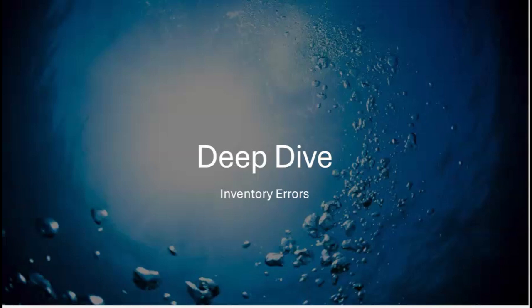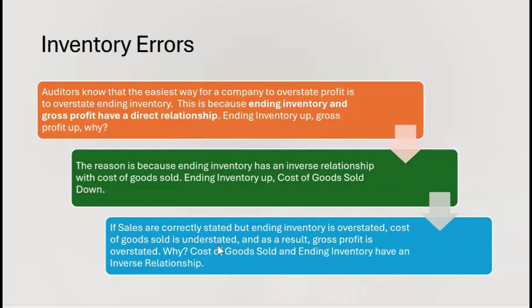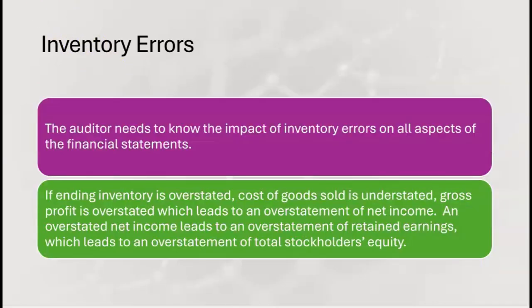Let's do a deep dive on inventory errors. This topic could be on any accounting exam — CPA, CMA, EA. Auditors know the easiest way for a company to overstate profit is to overstate ending inventory. Ending inventory and gross profit have a direct relationship — ending inventory up, gross profit up. This is because ending inventory has an inverse relationship with cost of goods sold: ending inventory up, cost of goods sold down.